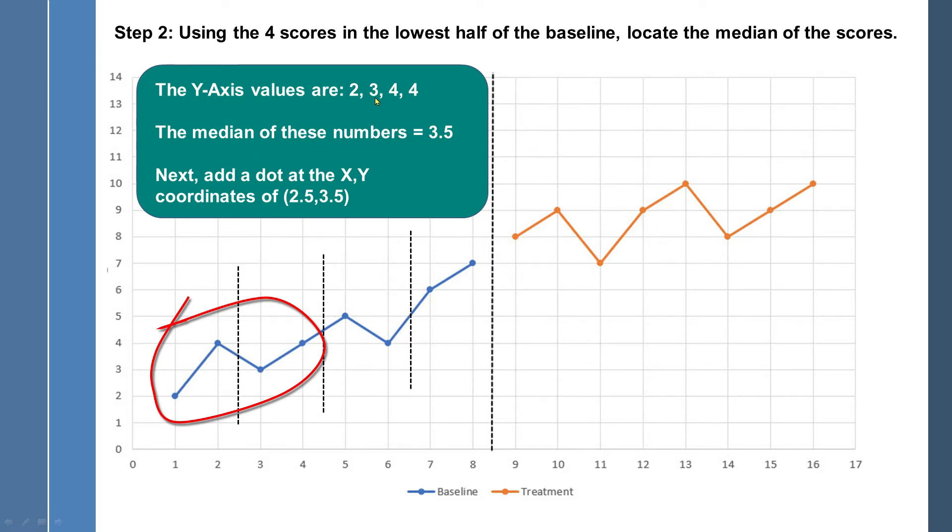Let's say you had a 3 and a 5. If it was 2, 3, 5, and 5, then the median would be 4.